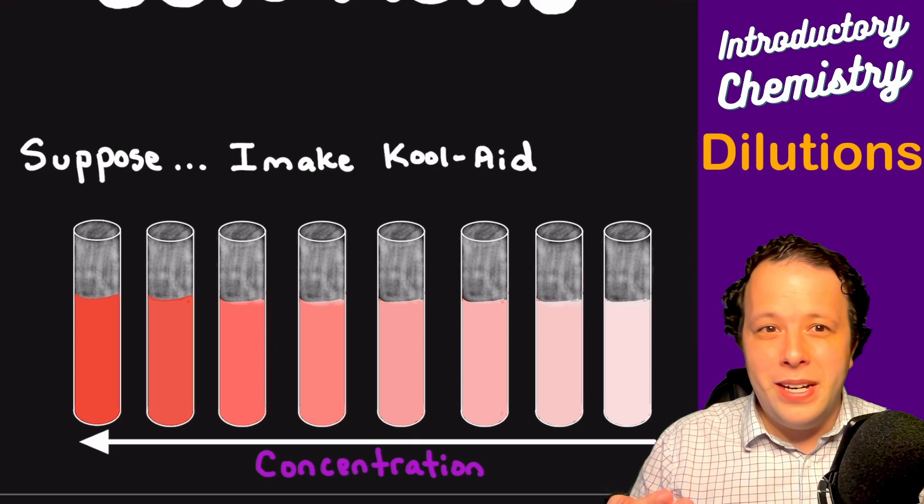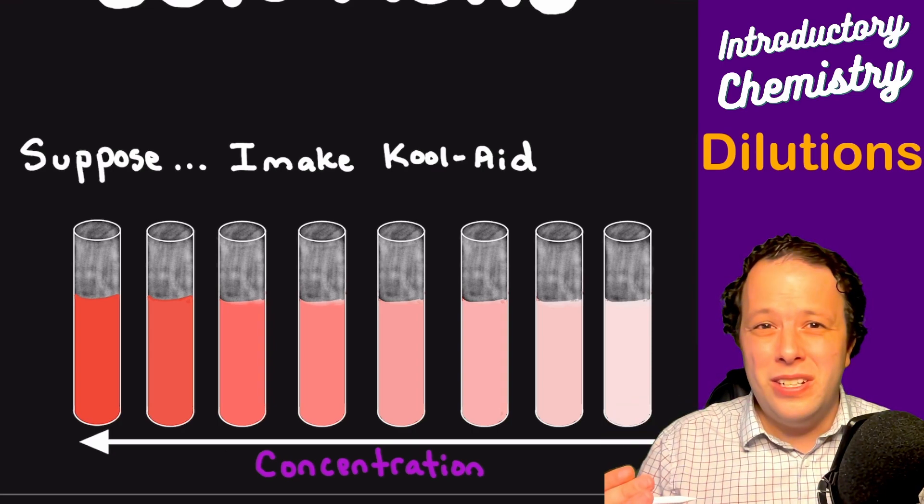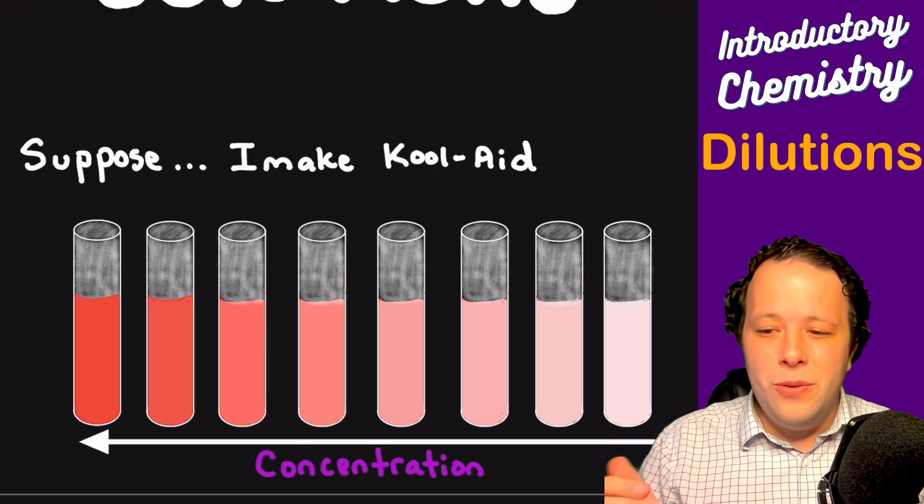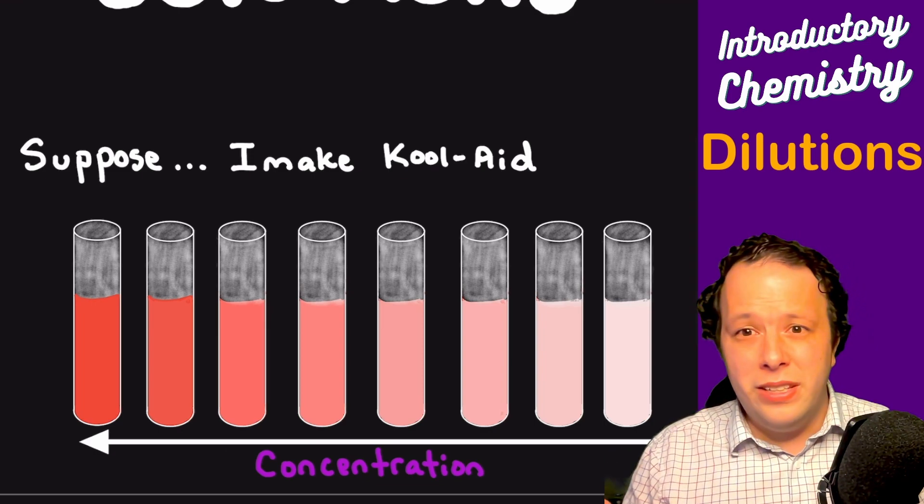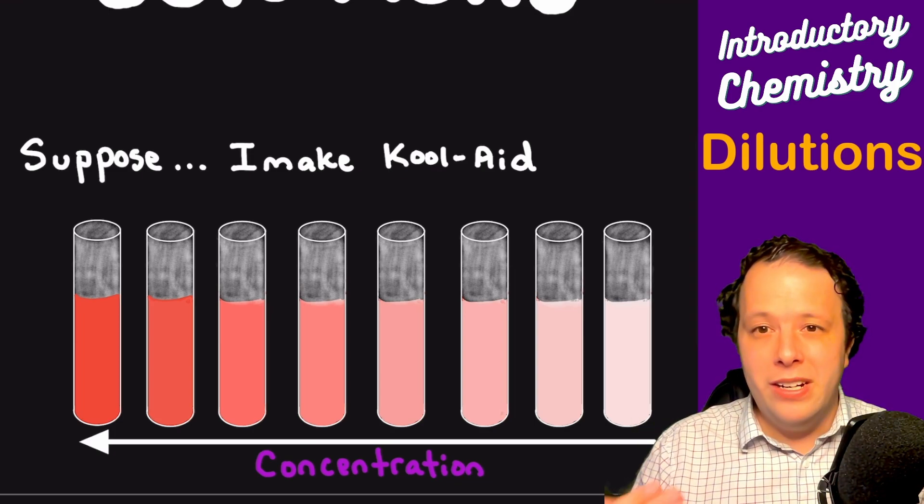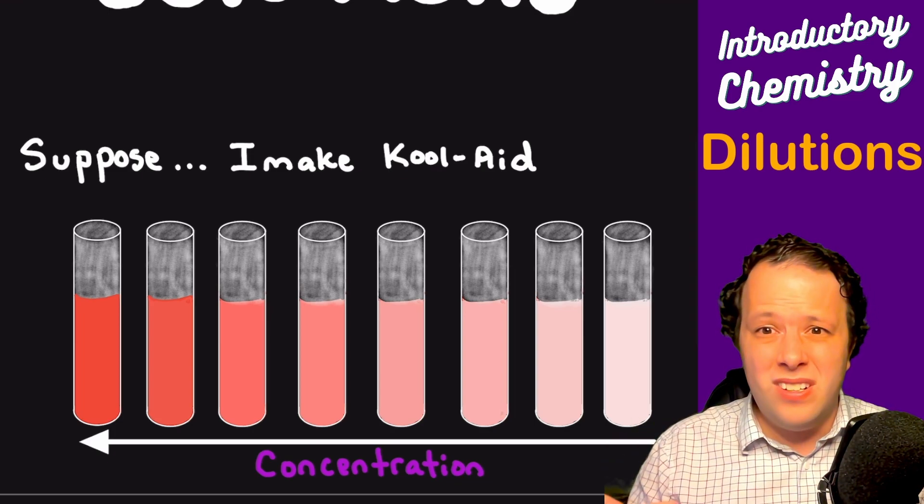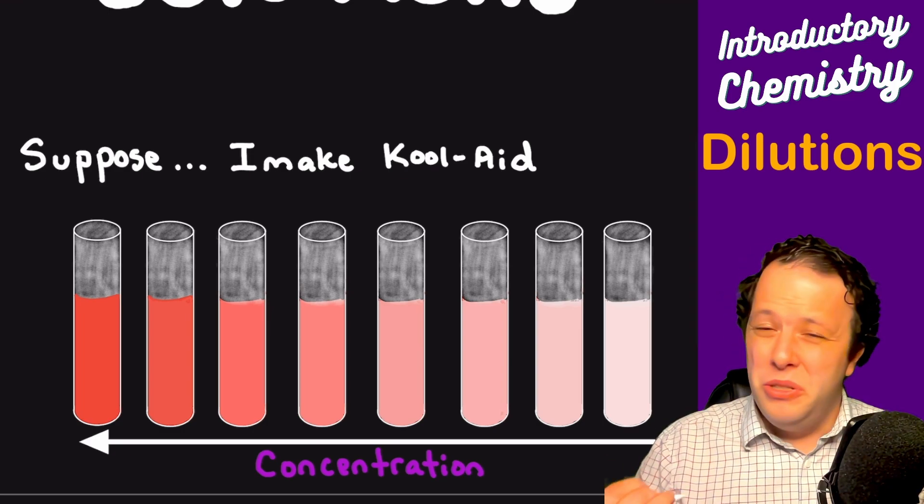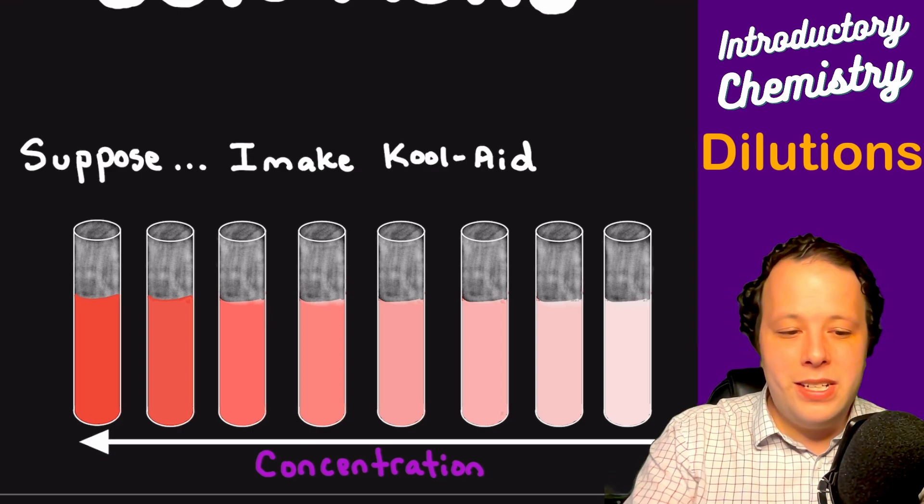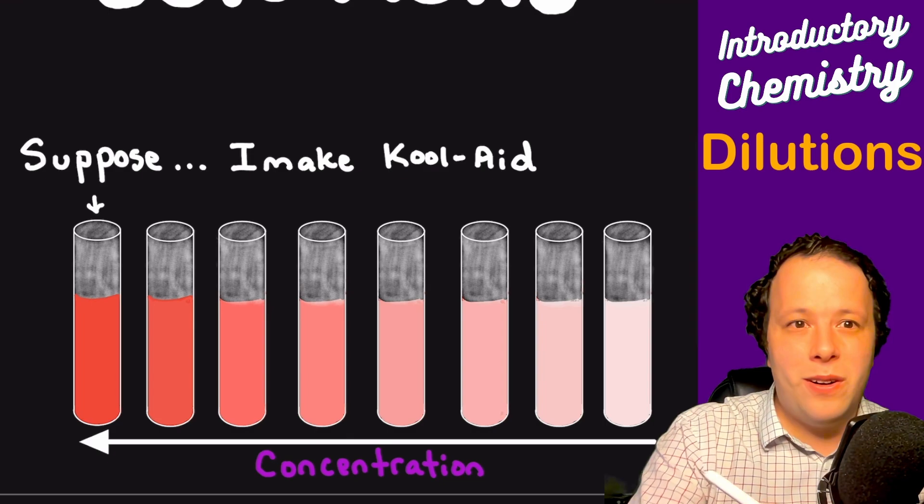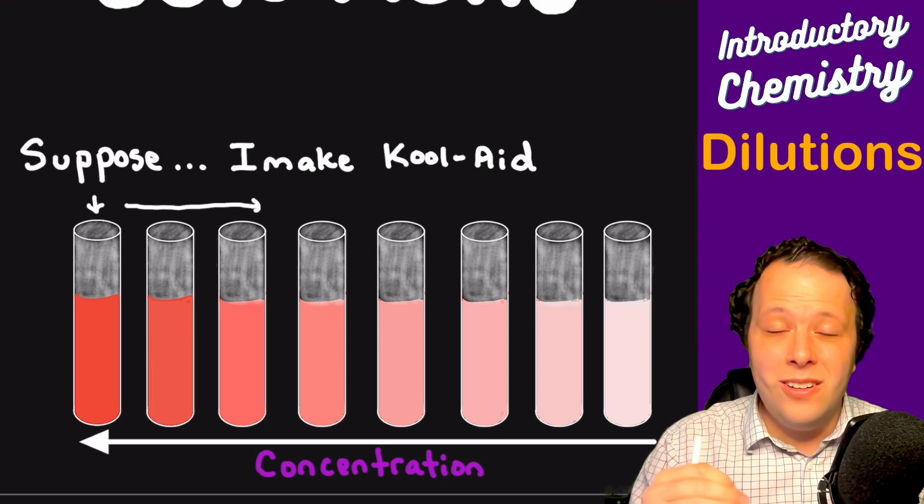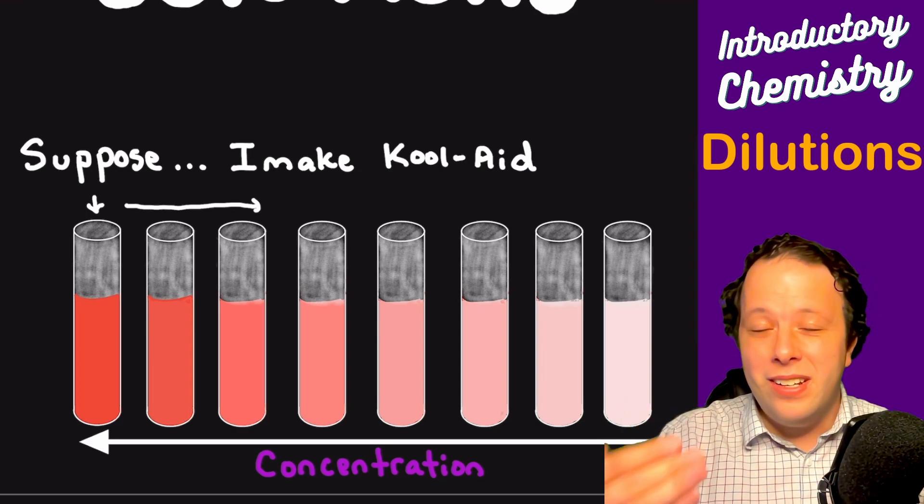The easiest way to think about it is let's say I wanted to make Kool-Aid or lemonade or iced tea. When you make it originally on the very far left and you drink it and realize it's way too sweet, what do you do? If something is too sweet or too salty, how do you change it? Well, usually you dilute it by adding a little bit of water. So if I started over here on the far left and keep adding water, one thing you'll notice is the color is going to get lighter and lighter and lighter.